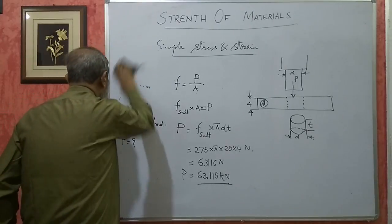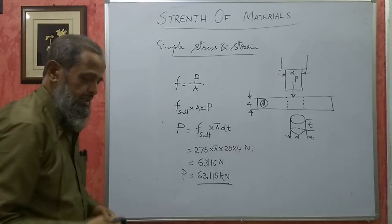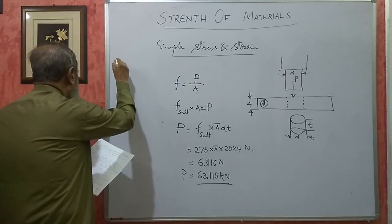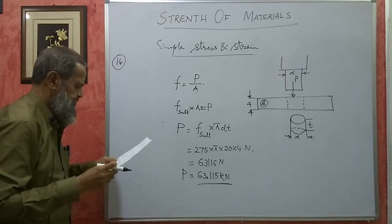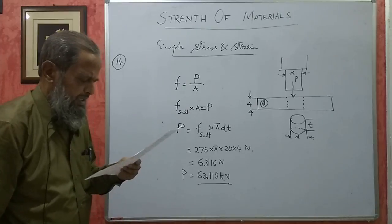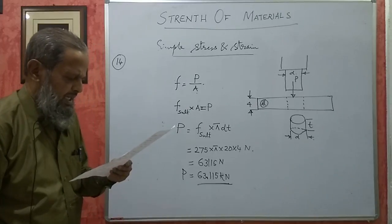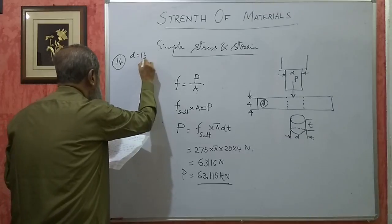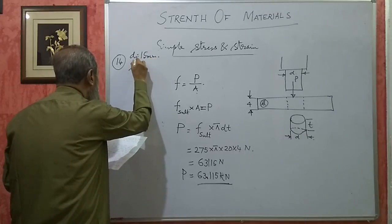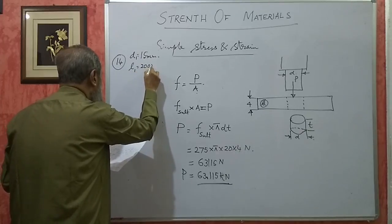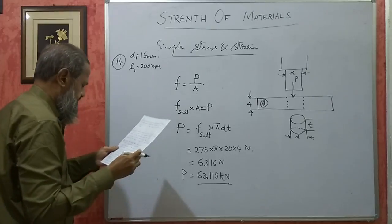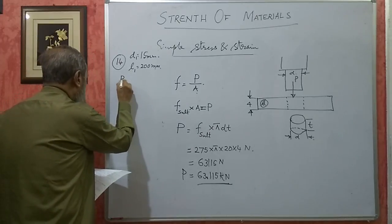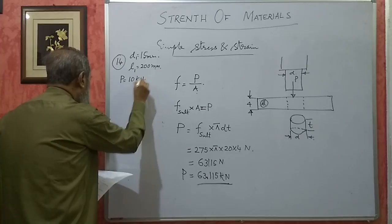Next I will take up one more problem — problem number 14. I have taken some different problems. The following data pertains to a tensile test conducted in a laboratory. The diameter of the specimen D is 15 mm. Length of the specimen L1 is 200 mm. Extension under a load of 10 kilo Newton — when the load was 10 kN, the extension observed was 0.035 mm.